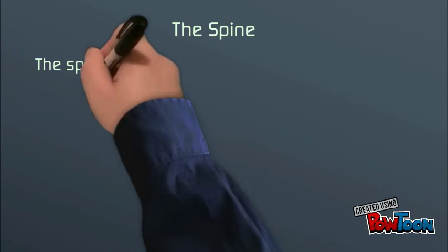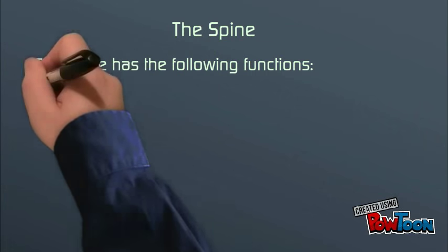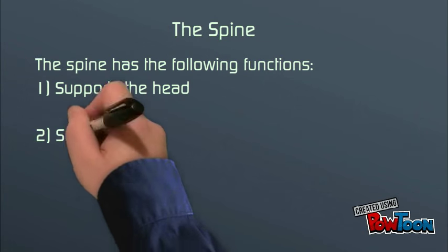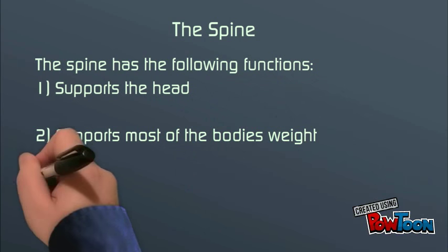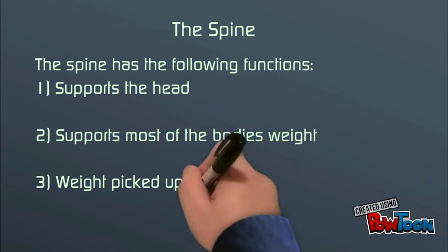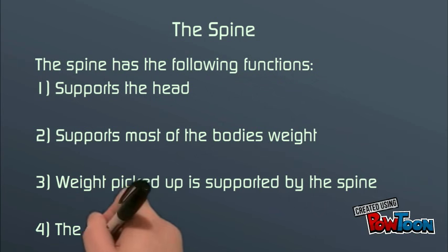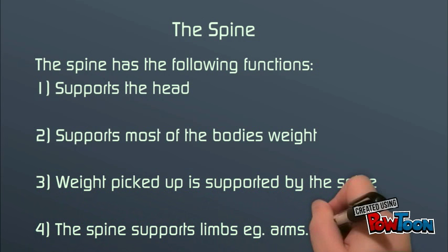The spine. The spine has the following functions: it supports the head, supports most of the body's weight, and weight picked up is supported by the spine. The spine also supports limbs, for example, arms.